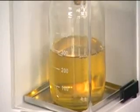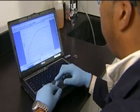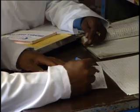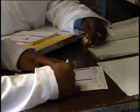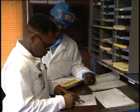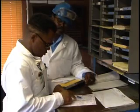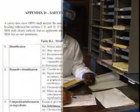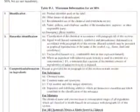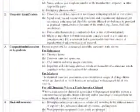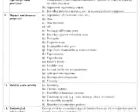Distributors must also ensure that downstream employers or companies are similarly provided an SDS. Whenever new or significant information regarding a chemical's hazard potential is realized, manufacturers and importers must update their SDSs. They are required to update the SDS within three months of learning any new information. Appendix D of the HCS explains the information to be included on the SDS and also the format required. All chemical manufacturers and distributors must use the same format.